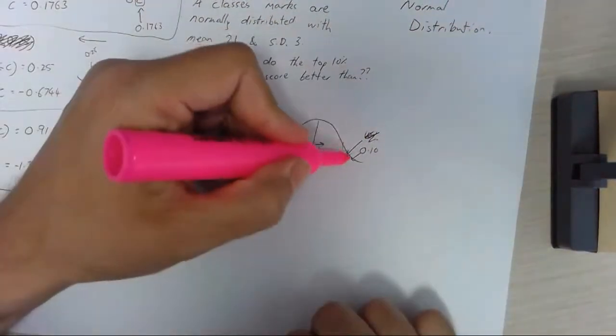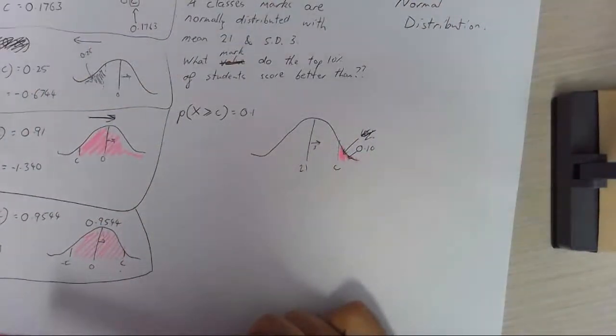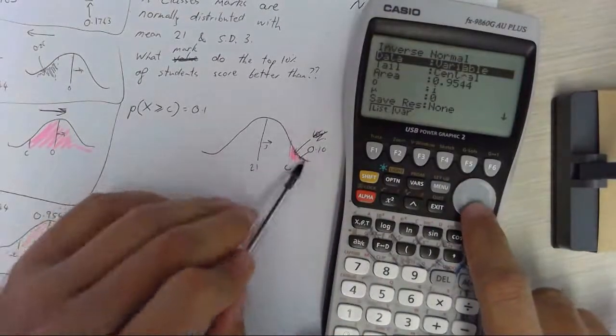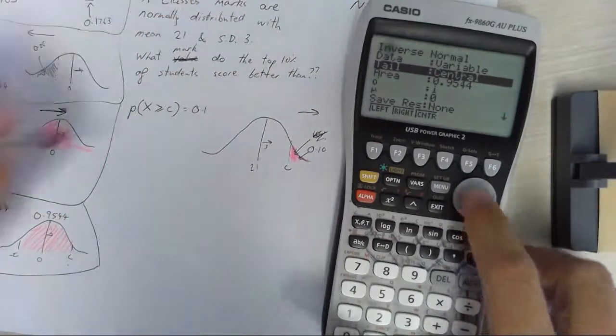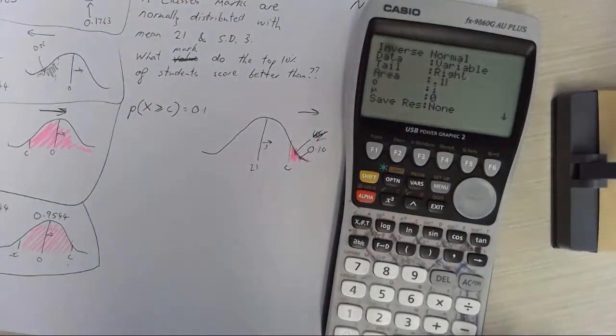Okay and so that's the area that we're looking for. We're asking what number do they score more than c? Okay so calculator out. This time we're doing a right tail.